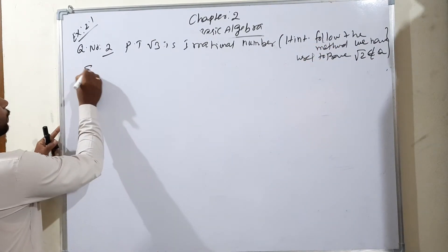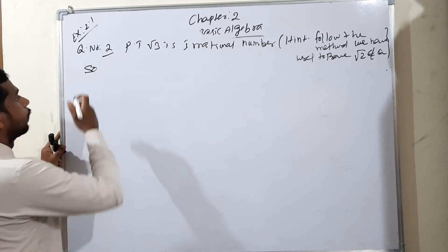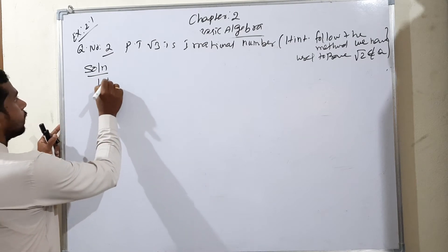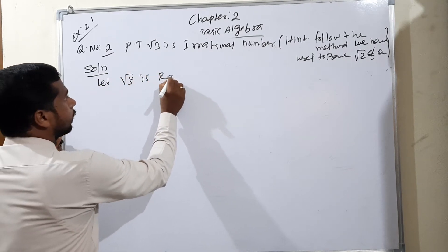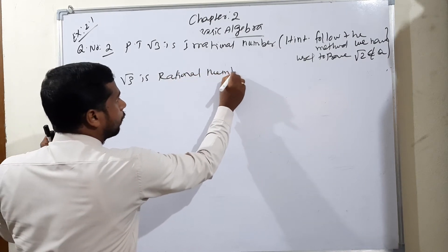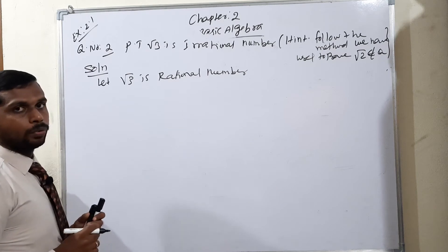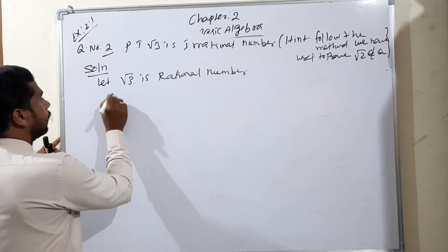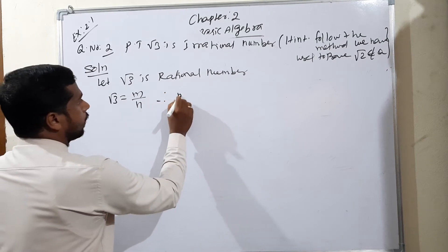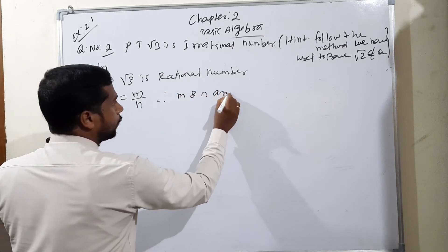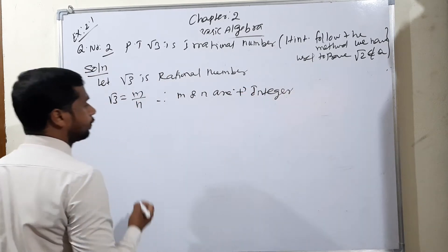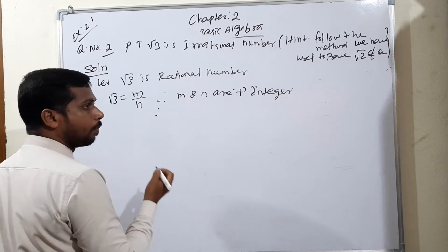Solution. We will follow the root 2 method. Let root 3 be rational. Root 3 being a rational number means it can be written in p by q form, that is m by n form. Therefore, root 3 is equal to m by n. We can say m and n are positive integers.